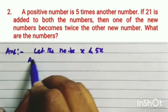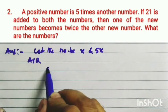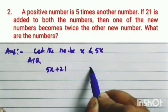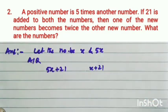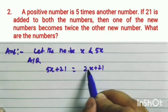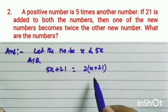Now, according to the question, if 21 is added to both the numbers, add 21 to both: 5x plus 21 and x plus 21. Then one of the new numbers becomes twice the other new number. This is the equation.